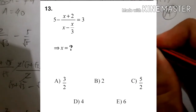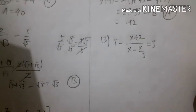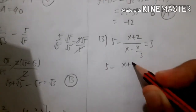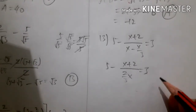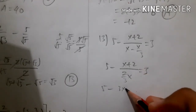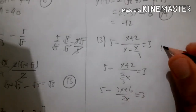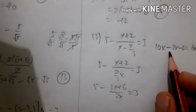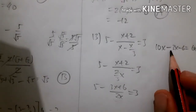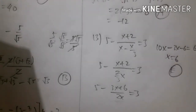For number 13: 5 minus x plus 2 over x, minus x over 3 equals 3 — find x. This is a simple question: rewriting gives 3x plus 6 over 2x equals 3. Multiplying by 2x: 10x minus 3x minus 6 equals 6x, so 7x minus 6x equals 6, giving x equals 10. The answer is E.